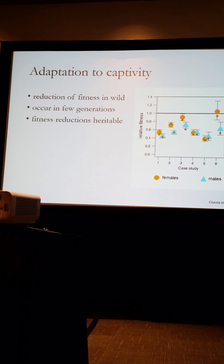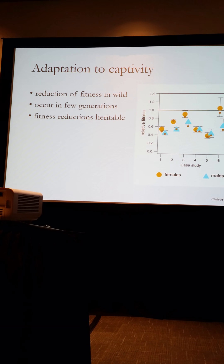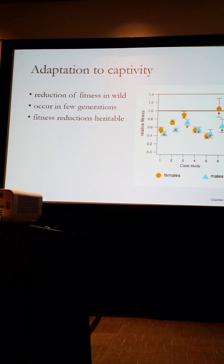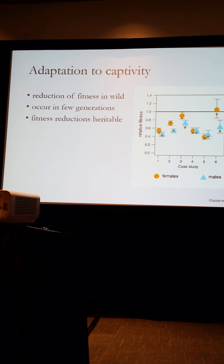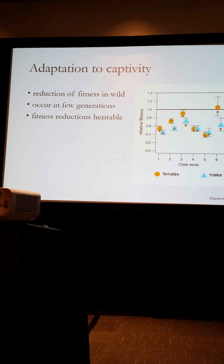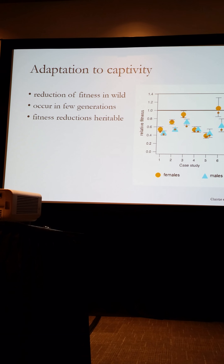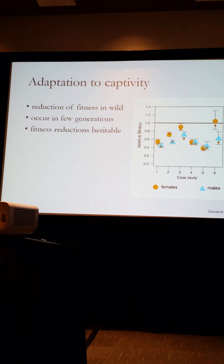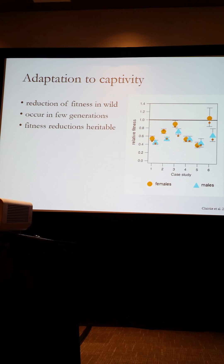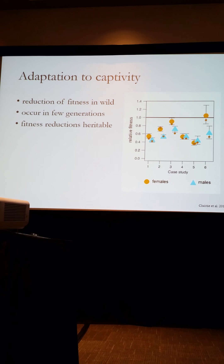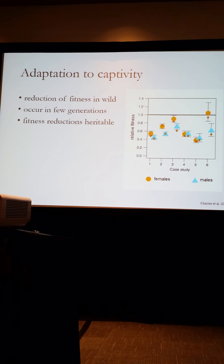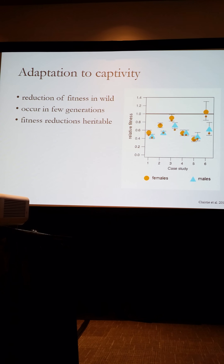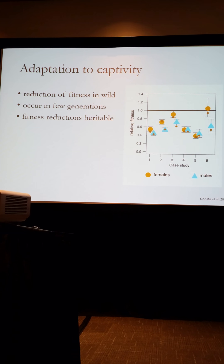This gets compounded because adaptation to captivity can occur in just a few generations, and at least some of the time this fitness reduction is heritable. So what this means for species bred in captivity is that over a relatively few number of generations, we can have a negative fitness consequence in the wild population.